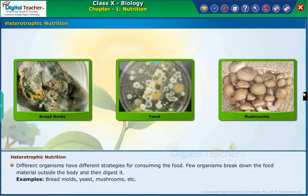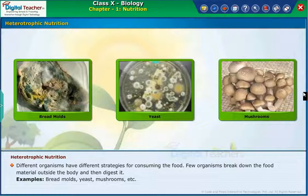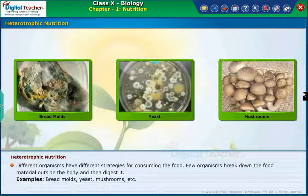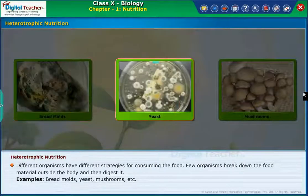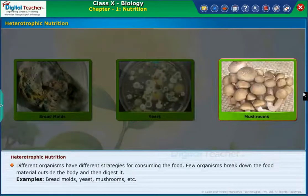Different organisms have different strategies for consuming food. Some organisms break down the food material outside the body and then digest it. Examples include bread molds, yeast, mushrooms, etc.